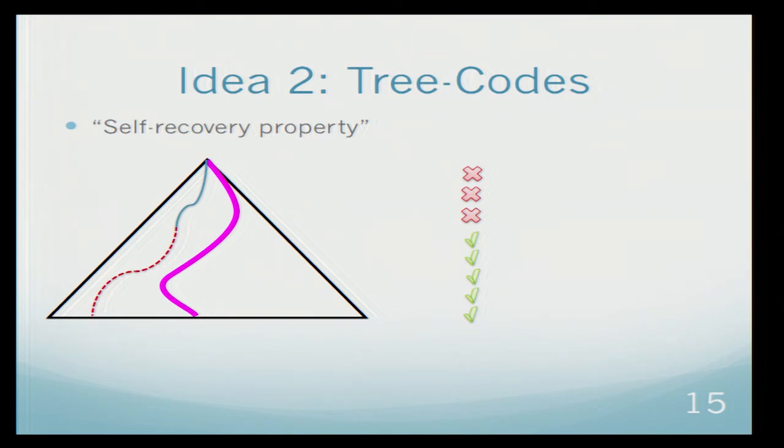Note that any extension of this path, the Hamming distance of this path and that path is actually large. And since there were not too many errors, then the word that Bob receives will be closer to the correct path. So at this point, Bob will be able to decode the entire path correctly. This is the self-recovery property.